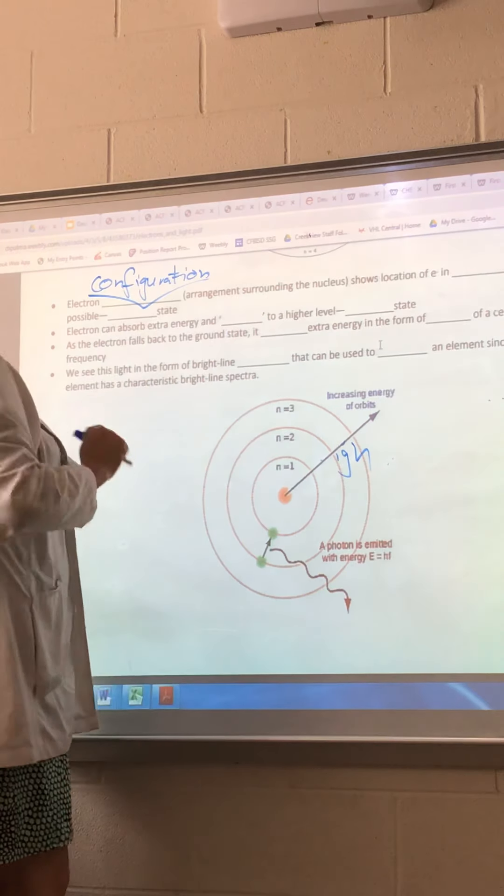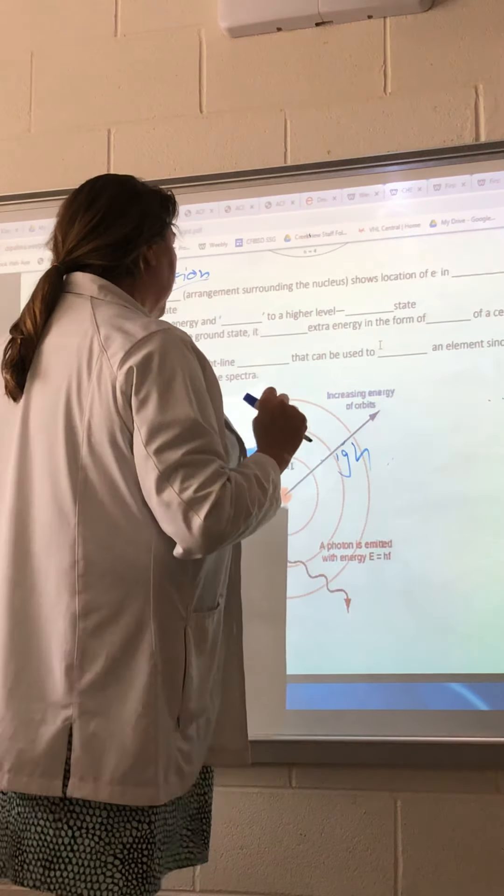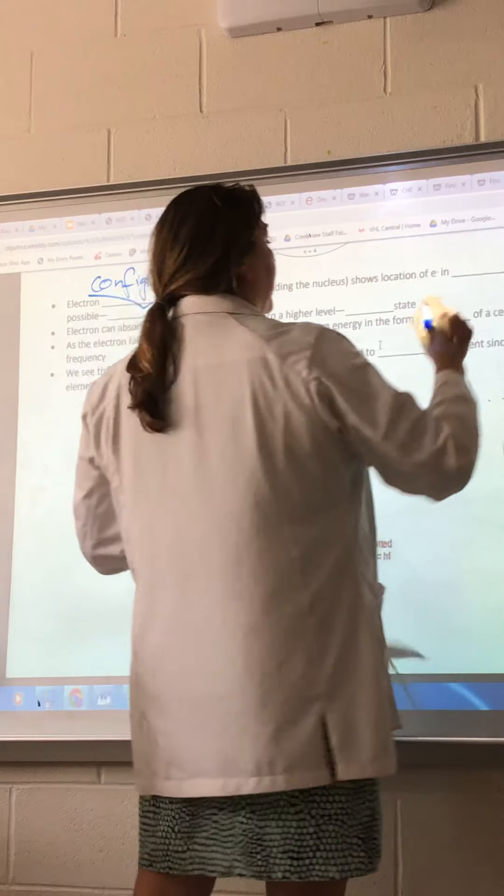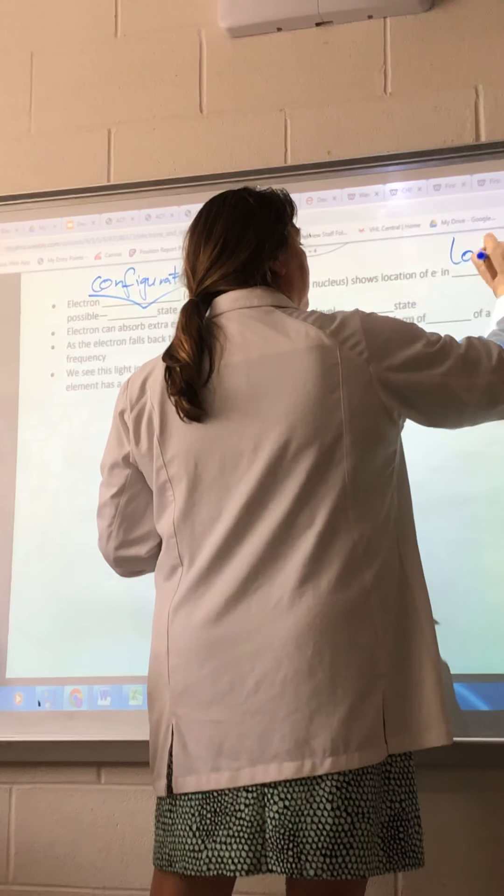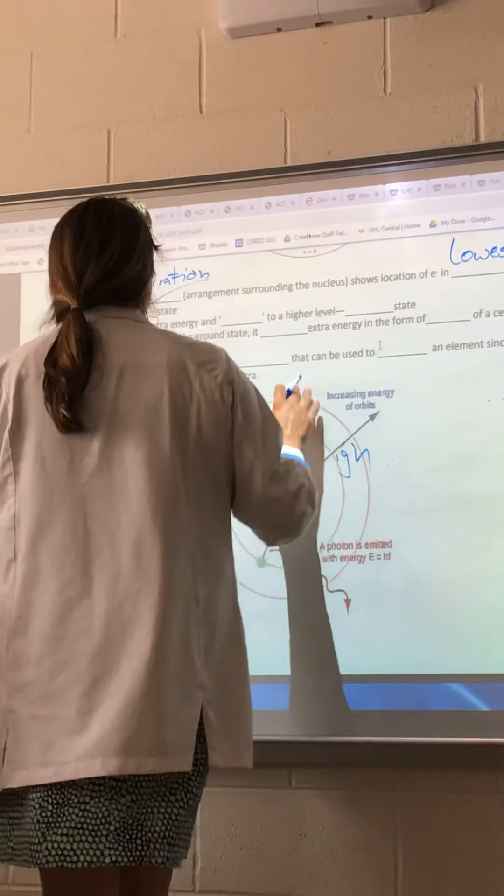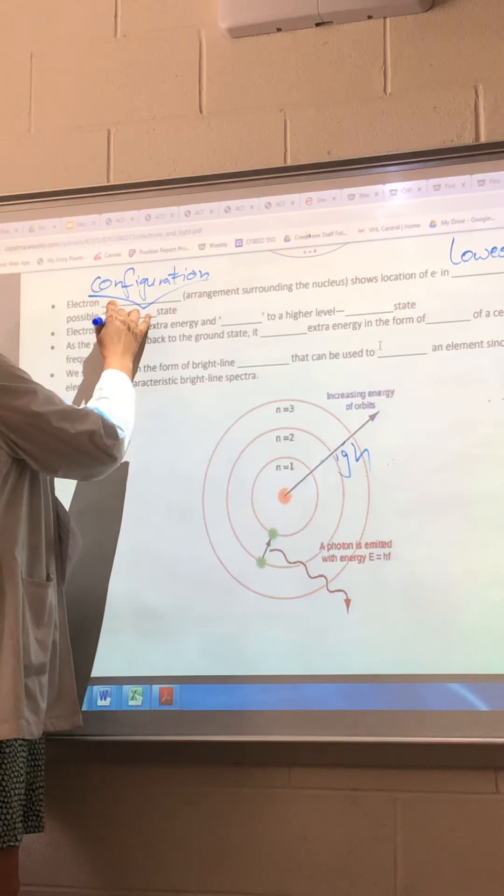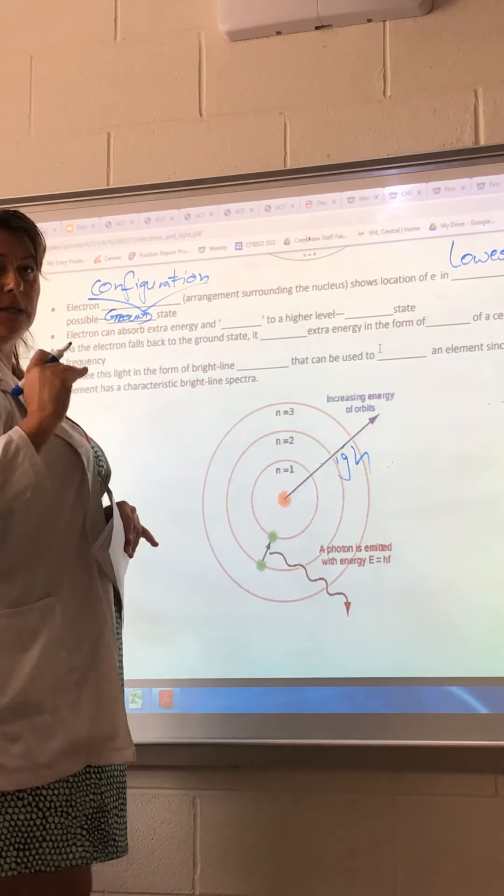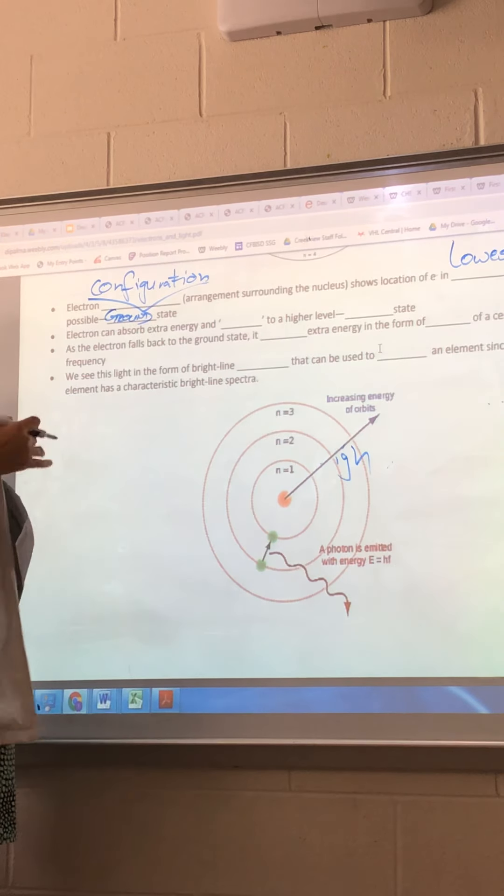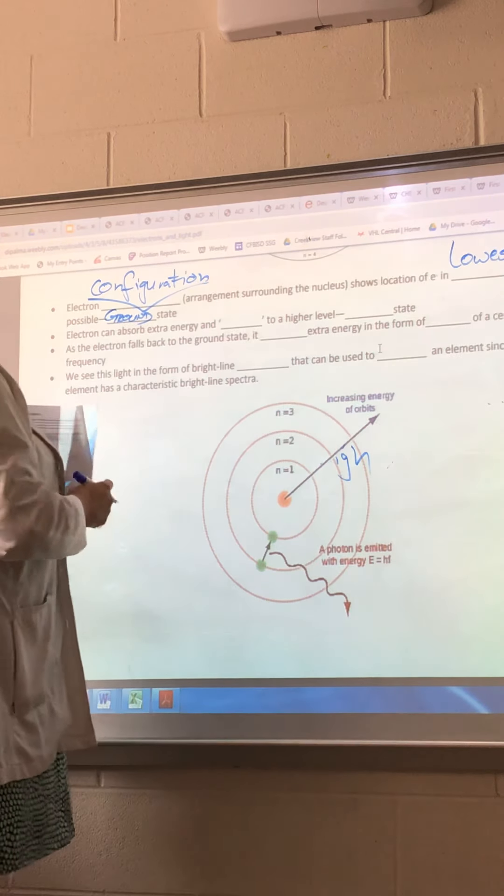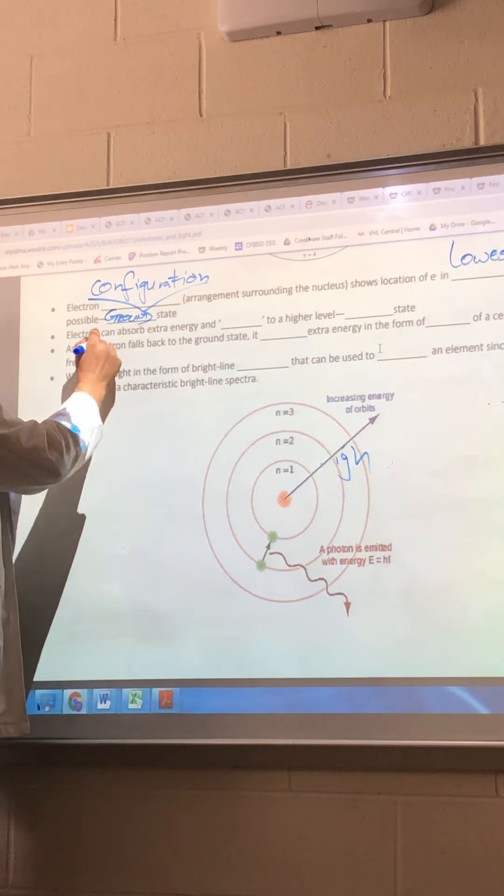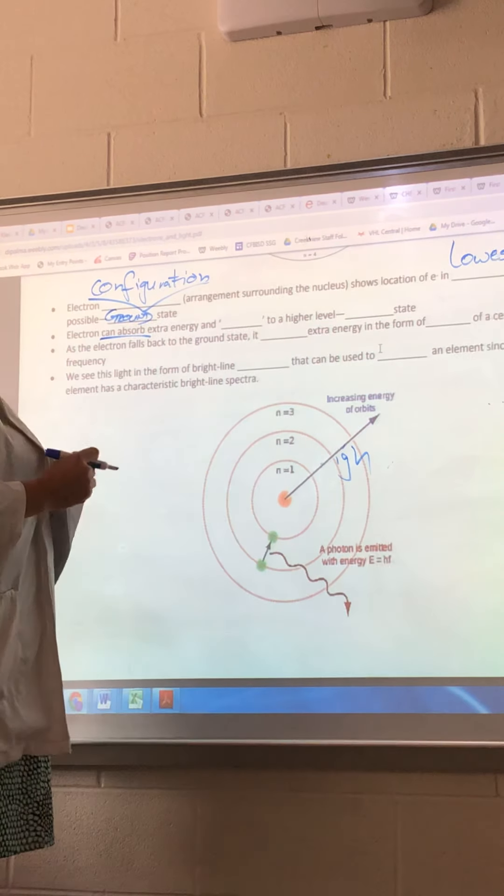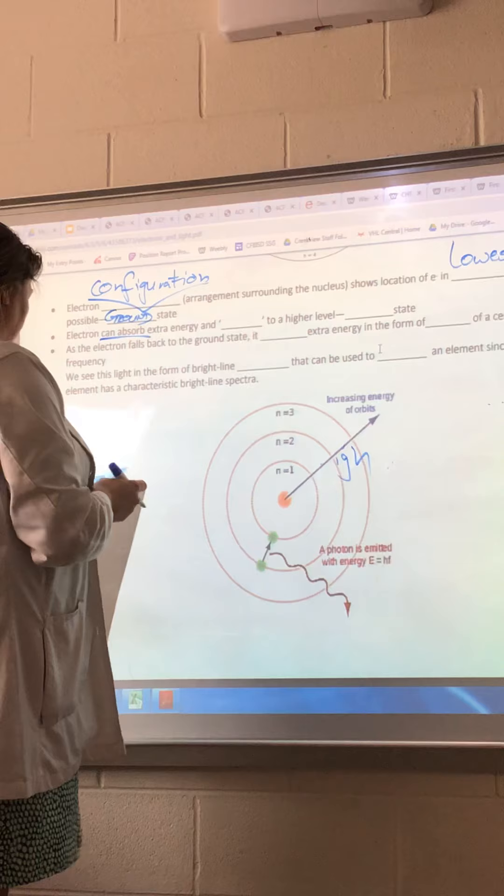It's an arrangement surrounding the nucleus. It shows the location of the electron in the lowest energy possible, which is called your ground state. So ground state is the very basic energy state that you find an electron in. An electron usually wants to be in the ground state. They can absorb extra energy and they basically jump to a higher level.